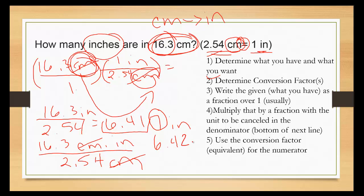Notice that the top number is multiplied and the bottom number is divided. So if you want to do this all in your calculator at one time, it would be 16.3 times 1 divided by 2.54, and it comes out to the same answer.